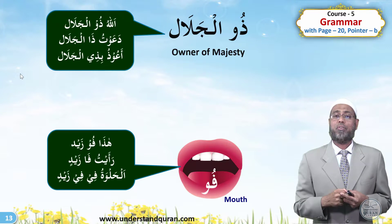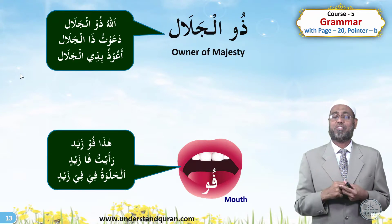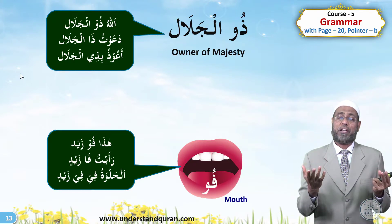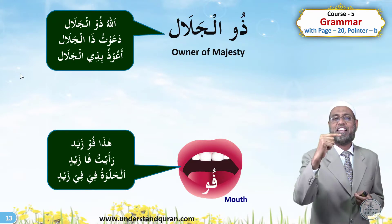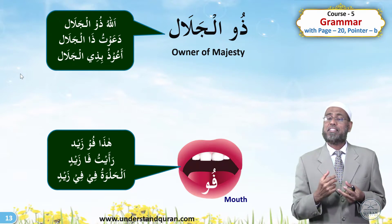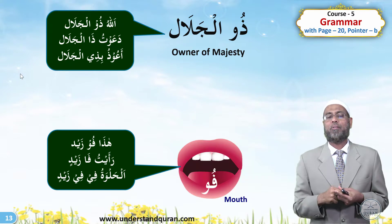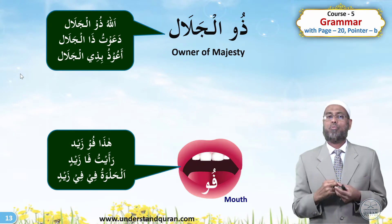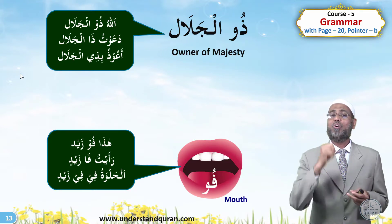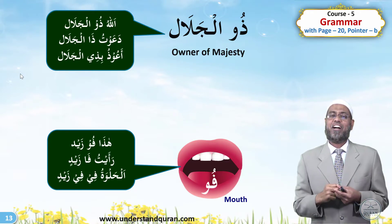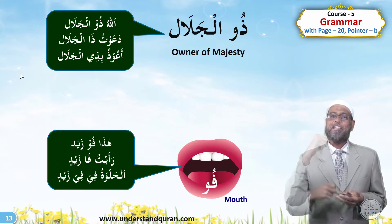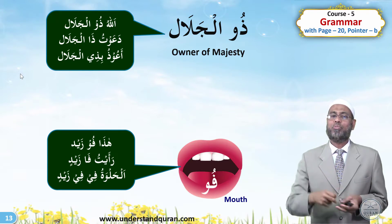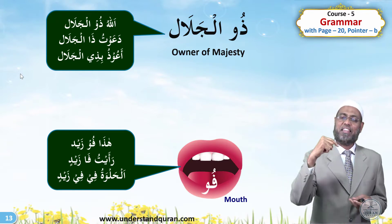And the last one: Dhu al-Jalal — owner of Majesty — Allah subhanahu wa ta'ala. Allahu Dhu al-Jalal. Da'awtu Dha al-Jalal — I prayed to the owner of Majesty. A'udhu bi Dhi al-Jalal — I seek refuge in the owner of Majesty. So Dhu, Dha, Dhi.